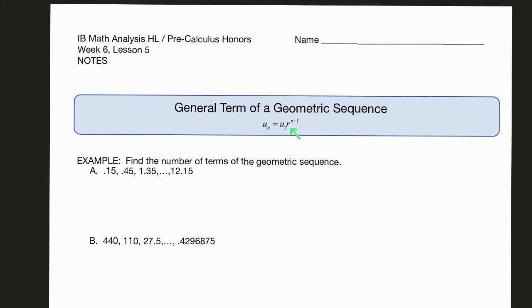So for this particular problem here I know that the first term is 0.15. I can figure out the ratio by taking any number and dividing by the number that came before it. It doesn't matter where in the list you are, the ratio will be consistent. This ratio is 3 and then this number is u sub n. So here we go, let me write down the formula u sub 1 r to the n minus 1 and let's plug in what we know.